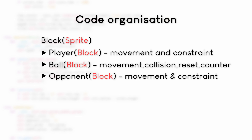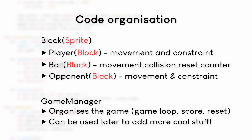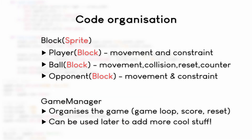Finally, we have the opponent class, which is also quite simple with just two methods: the update method and the constraint method. The update method moves the opponent to wherever the ball happens to be, and the constraint method makes sure it doesn't move outside of the screen. There's also one more class called GameManager, which organizes the entire game — it runs the game loop, resets the ball to the middle of the screen, and draws the score. With these five classes we can recreate our entire Pong game logic.